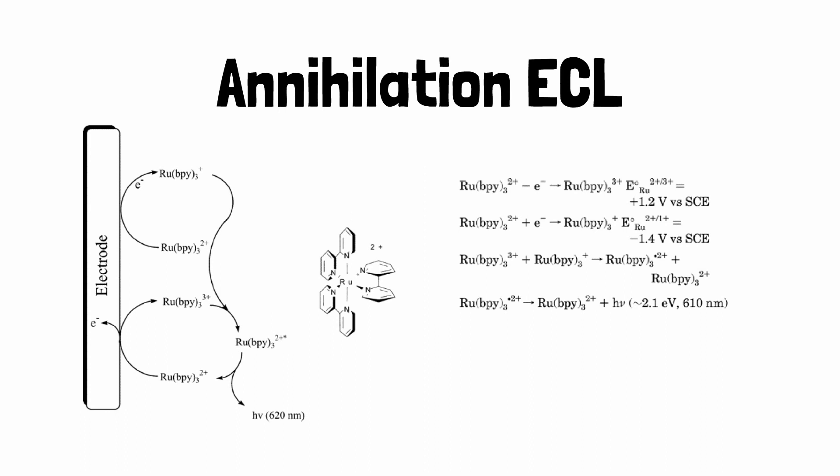For example, ECL from Ru(bpy)3^2+ was first reported in 1972 in acetonitrile (MeCN), using tetrabutylammonium tetrafluoroborate (TBAF4) as the electrolyte.